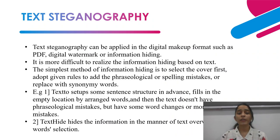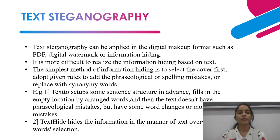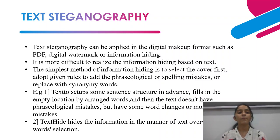Steganography has many types. One type is text steganography. Text steganography can be applied to any file format such as PDF, digital watermarks, or information hiding, and it is more difficult to realize information hiding based on text. Various methods are used, including a tool called Texto, which sets up sentence structures in advance, fills empty locations with arranged words, and may contain morphological mistakes. Another method, Text Hide, hides information through text overwriting and word selection.